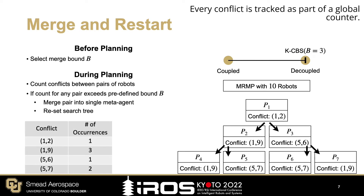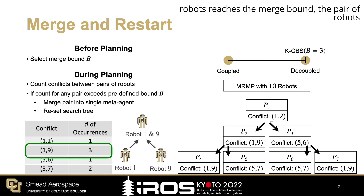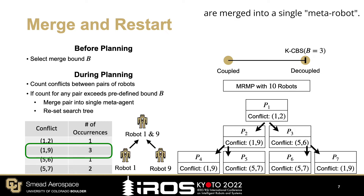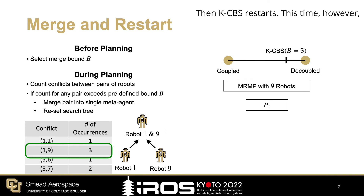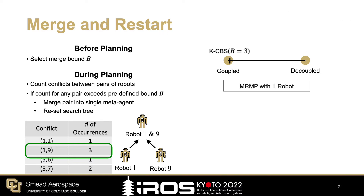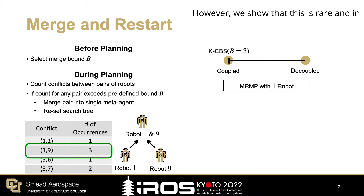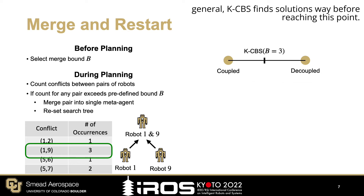As planning progresses, conflicts are found. Every conflict is tracked as part of a global counter. If the number of conflicts between any pair of robots reaches the merge bound, the pair of robots are merged into a single meta-robot. Then KCBS restarts. This time, it solves a 9-robot problem because two robots are now coupled together. This process continues until a solution is found. In the worst-case scenario, all robots are eventually coupled together and KCBS becomes a coupled algorithm. However, we show that this is rare, and in general, KCBS finds solutions well before reaching this point.